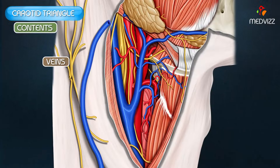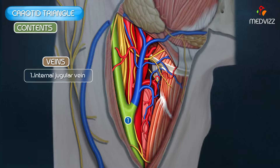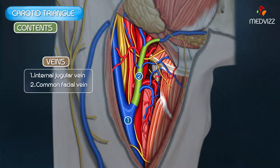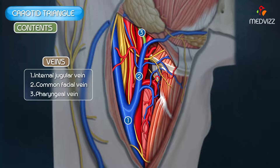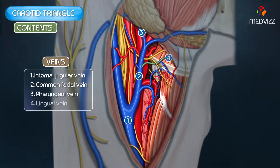The important veins in the carotid triangle are the internal jugular vein, the common facial vein draining into the internal jugular vein, the pharyngeal vein which usually ends in the internal jugular vein, and the lingual vein which also terminates in the internal jugular vein. So all these veins terminate in the internal jugular vein.